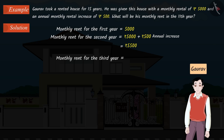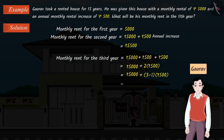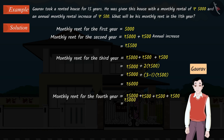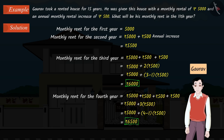Similarly, we can find the monthly rent for the third year by adding Rs. 500 to the rent of the previous year. We can also find the monthly rent for the fourth year. Therefore, the monthly rent for the third year will be Rs. 6,000 and the monthly rent for the fourth year will be Rs. 6,500.